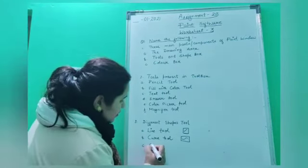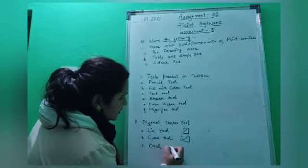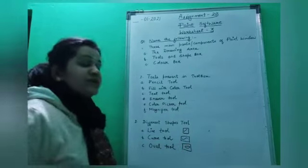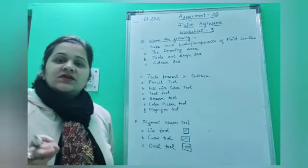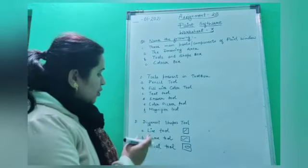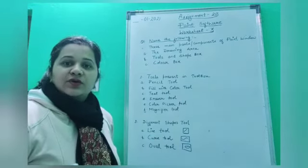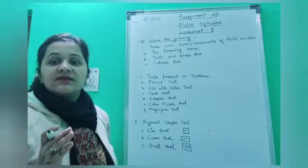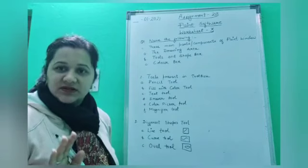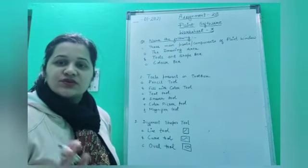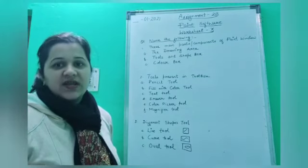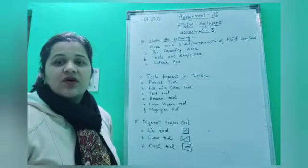Next is oval tool. If you want to draw circles of different sizes in your drawing, you would use this oval tool. You can draw oval shapes and circles with it. There is no particular circle tool available in the toolbox, so you use this oval tool to draw different ovals and circles of different sizes.